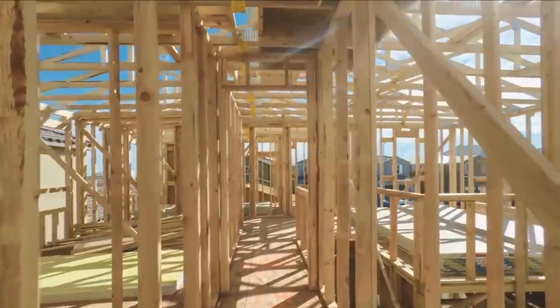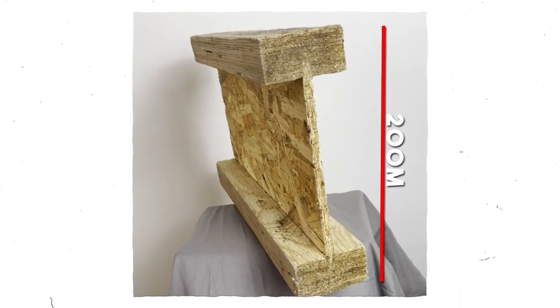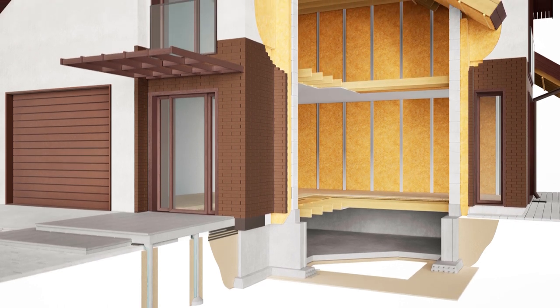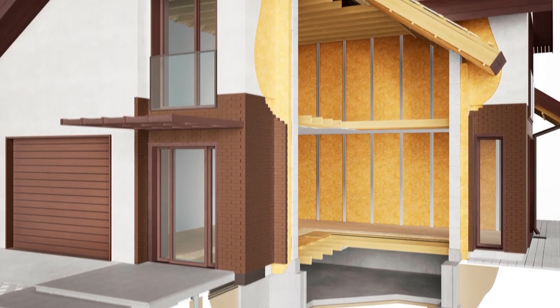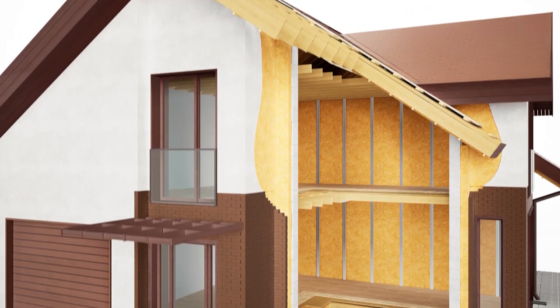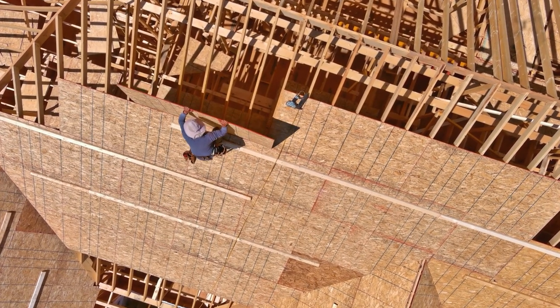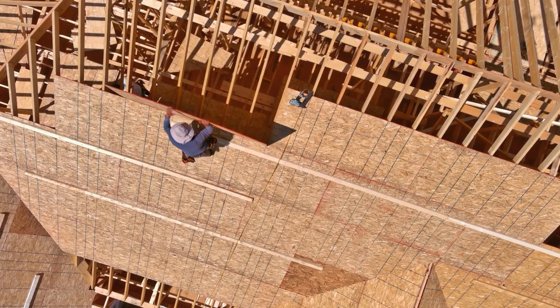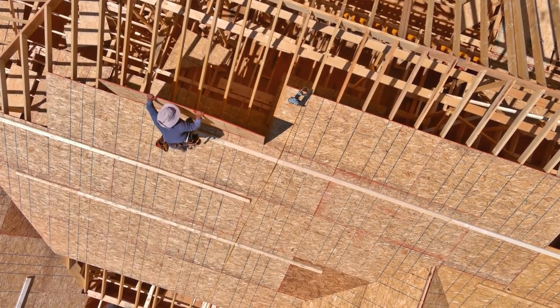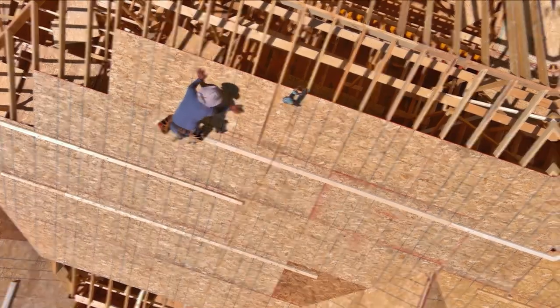When using I-joists as lintels, standard I-joists are a minimum 200 mm deep, so you need to ensure enough room above the opening. Tie-down and connection to the jamb studs will require more designer input, and if you have a concentrated load, a web stiffener may be required. Using I-joists for roof framing also requires detailing around overhangs, extra blocking and stiffeners, and designer input at box gutter rebate details.